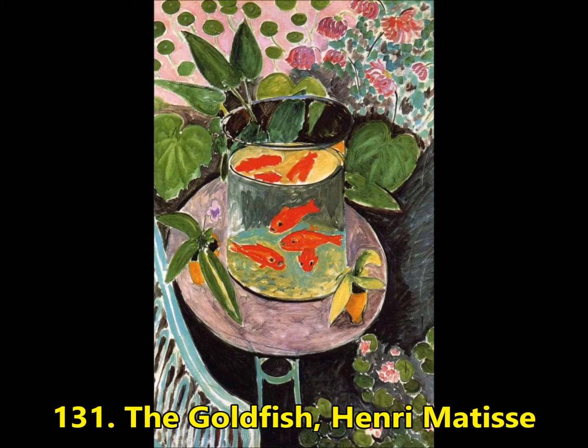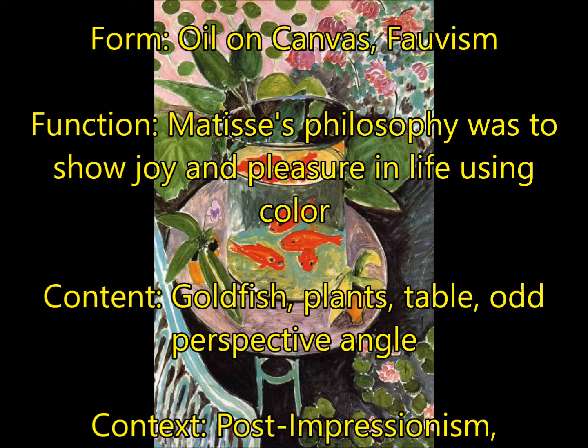Next, we're going to see The Goldfish by Henri Matisse. For form, this is an oil on canvas, and it is indicative of Fauvism — you can just think of this as post-impressionism. For function, Matisse's philosophy was to show joy and pleasure in life using color and the way he was painting. For content, there's goldfish swimming in a bowl, there are plants on a table, but it has an odd perspective or viewing angle that doesn't quite match up. This is post-impressionism.